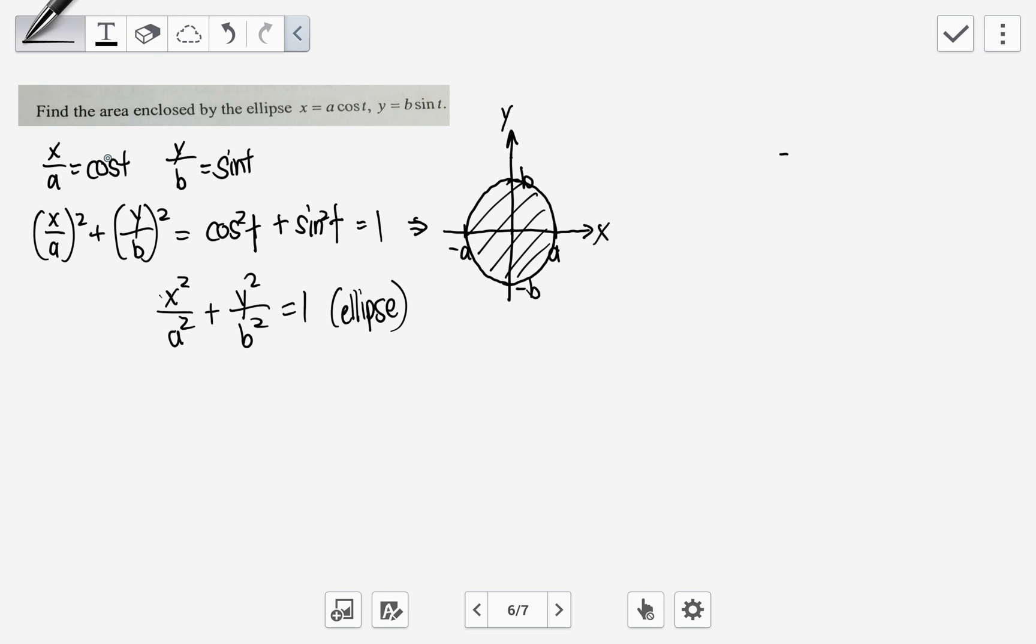Because x over a equals cosine t, y over b equals sine t, by squaring them and adding them up, I actually make use of the trigonometry identity cosine squared t plus sine squared t equals 1. So I know this relationship: x squared over a squared plus y squared over b squared equals 1.